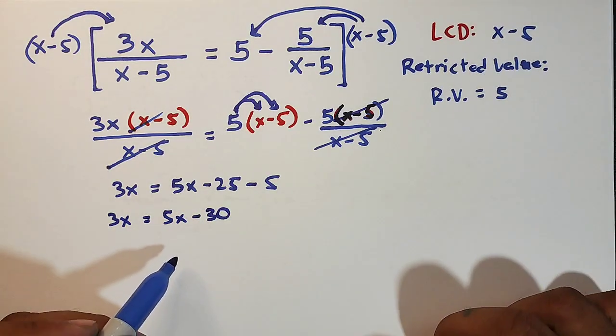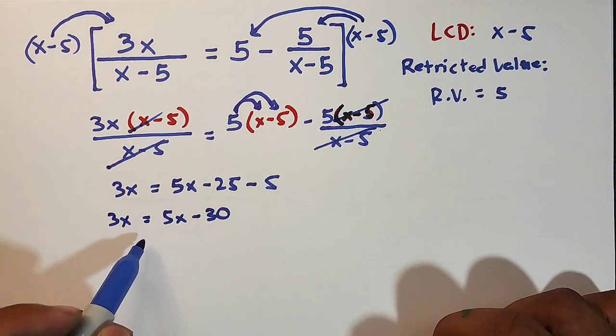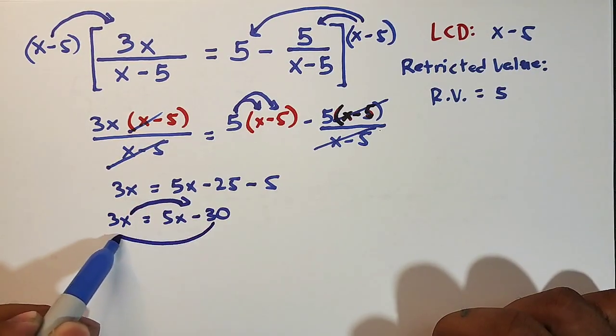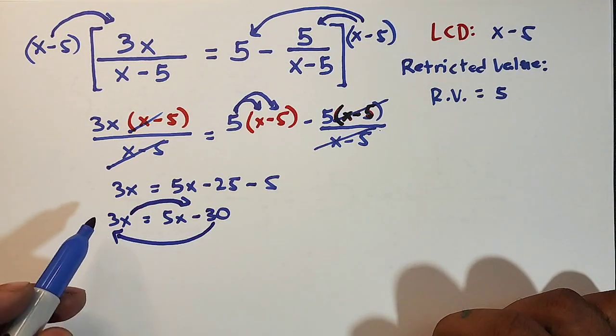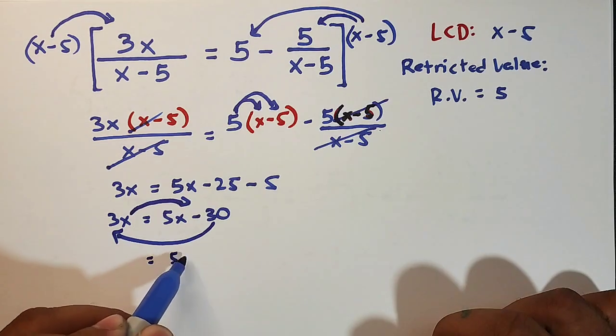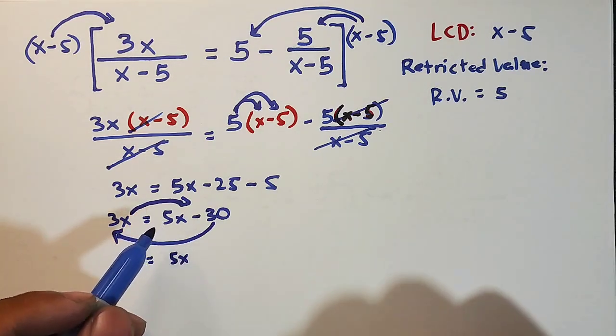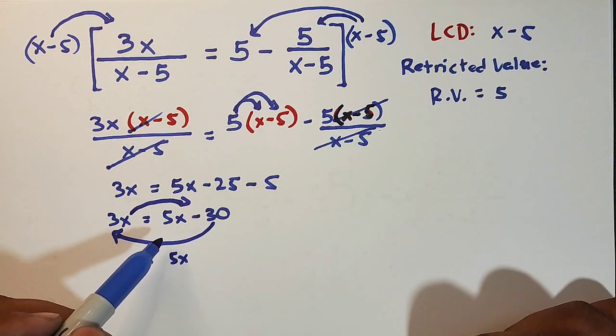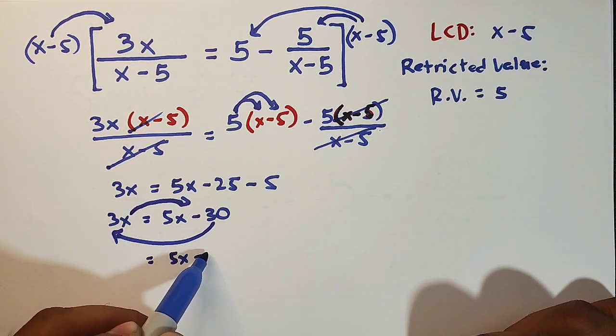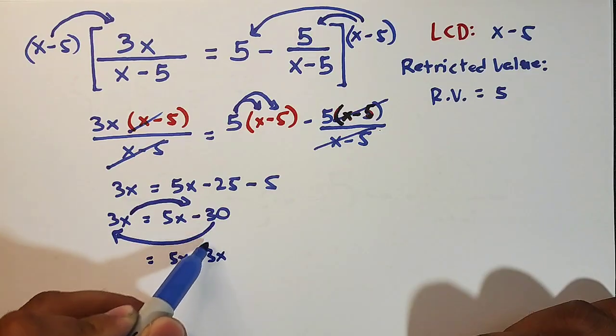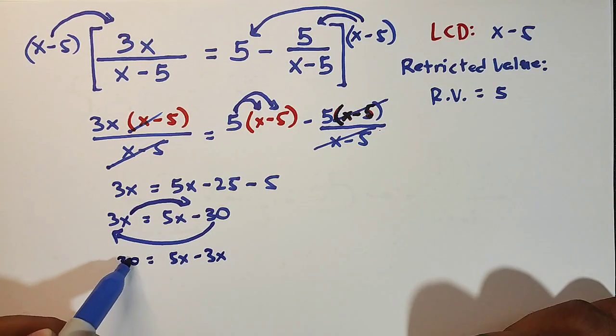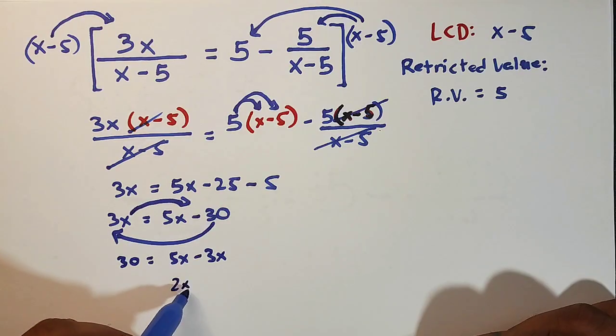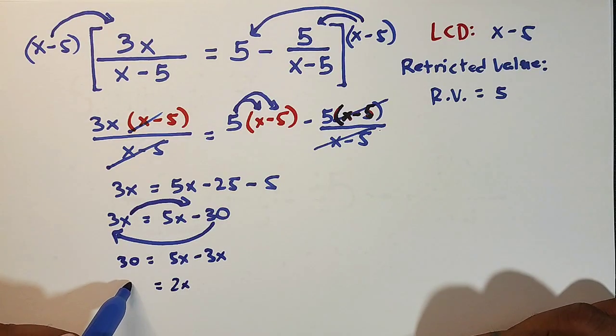So what will happen here is that I will transpose 3x to the other side and I will transpose negative 30 to the other side. So I will copy 5x. The reason why I'm transposing 3x is so we don't have a negative. Okay, so your 3x will become negative 3x. Then your negative 30 will become positive 30. So 5x minus 3x is simply 2x is equal to 30.